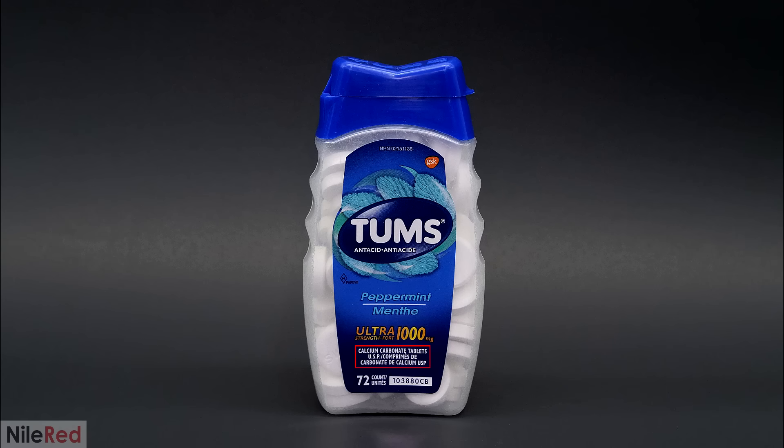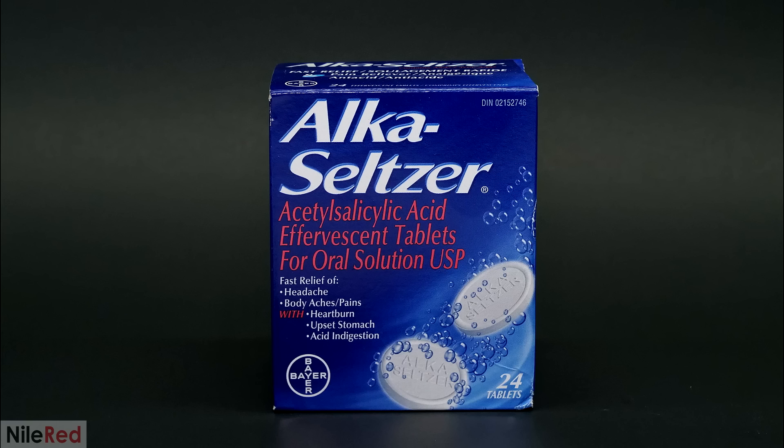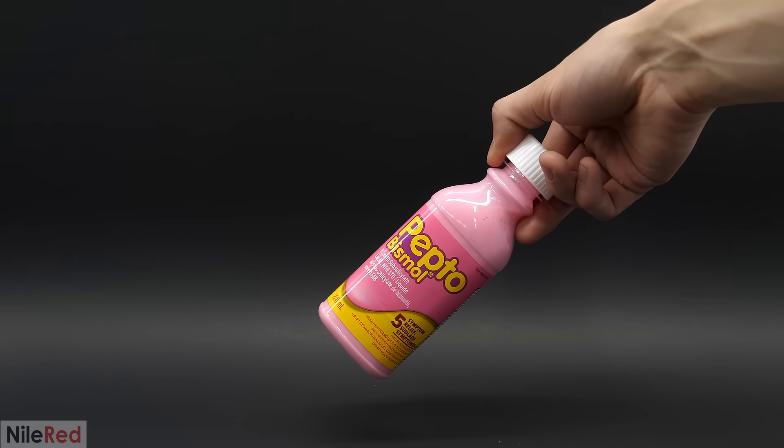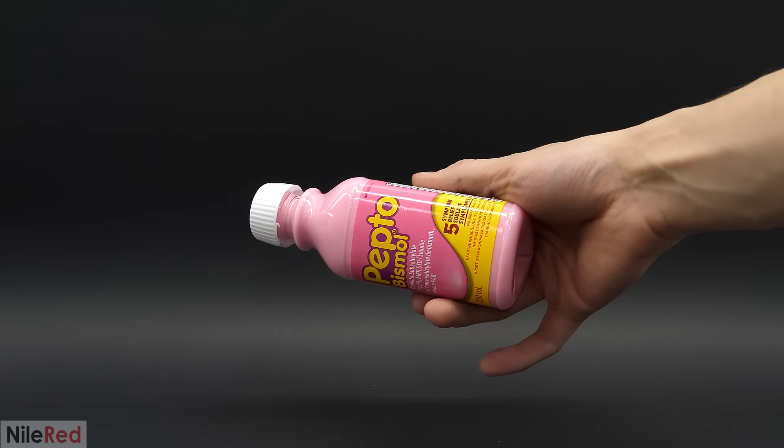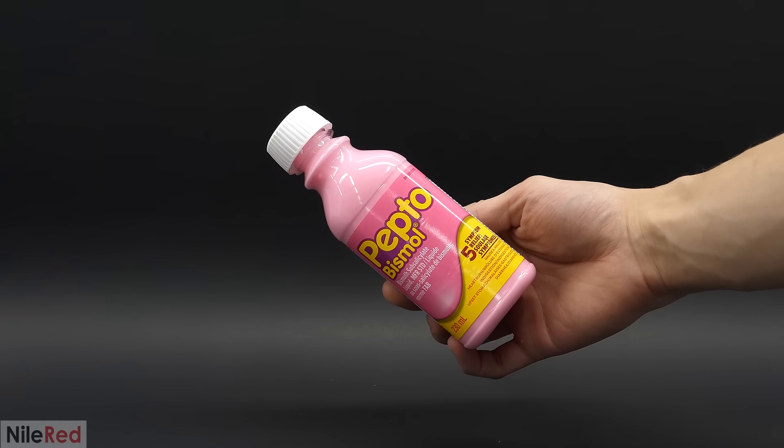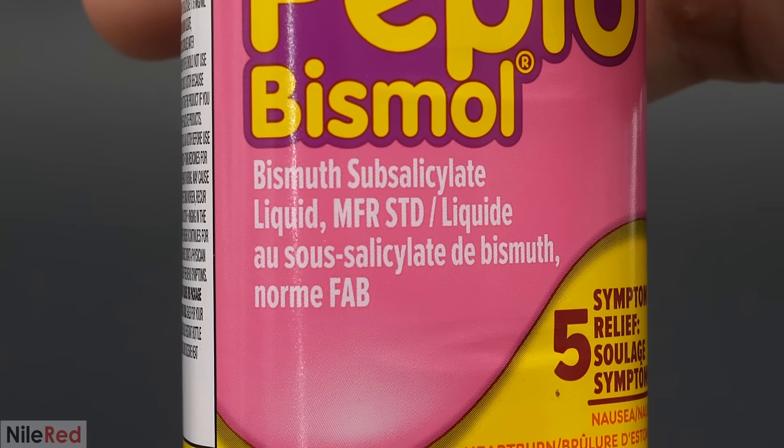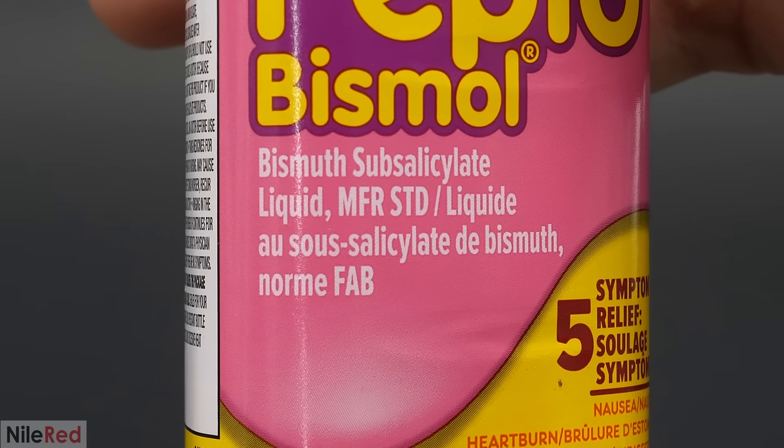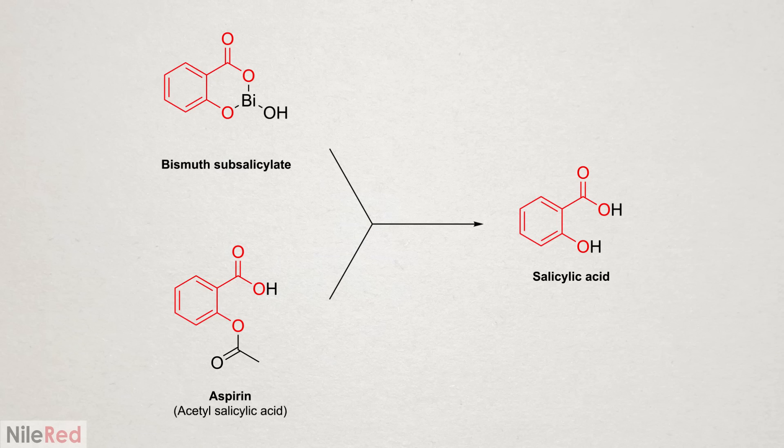Most of the common antacid products are relatively simple and only include a base. Some other ones though, like Alka-Seltzer, can also contain a pain reliever like aspirin. But out of all of them, I think Pepto-Bismol's the most unique. Just like Alka-Seltzer, it's a mixture of a pain reliever and a base, but it doesn't just use run-of-the-mill aspirin. Instead, it uses something called bismuth subsalicylate. It's chemically similar to aspirin, and in the body, they're both broken down to salicylic acid, which is the active pain reliever and anti-inflammatory.